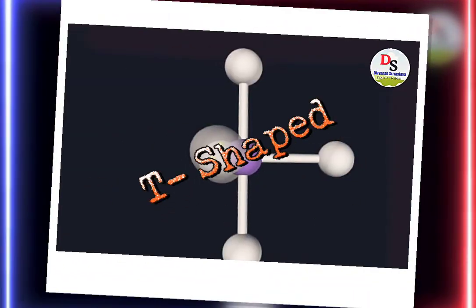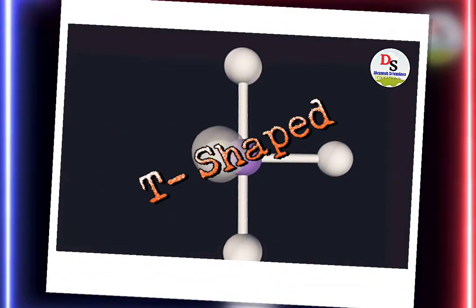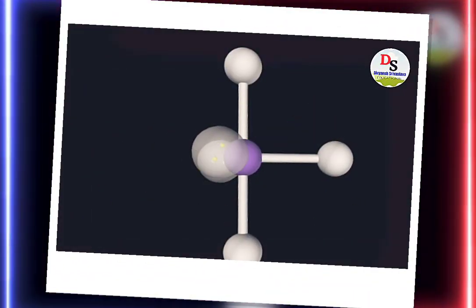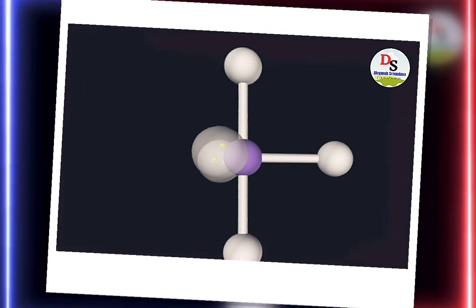It is the T-shaped structure of a molecule. It has 3 bond pairs and 2 lone pairs.